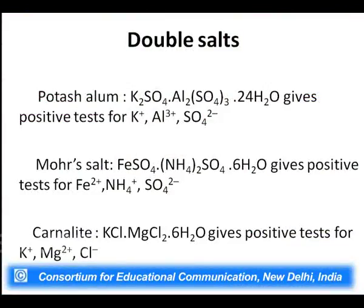For example, potassium alum is a double salt of potassium sulfate and aluminum sulfate. When potassium sulfate and aluminum sulfate are mixed in equimolar ratios and the solution is allowed to crystallize, crystals of potassium alum separate out. But on dissolution in water, these crystals give rise to potassium ions, aluminum ions, and sulfate ions. When the solution is tested, it shows a positive test for potassium ions, aluminum ions, as well as sulfate ions.